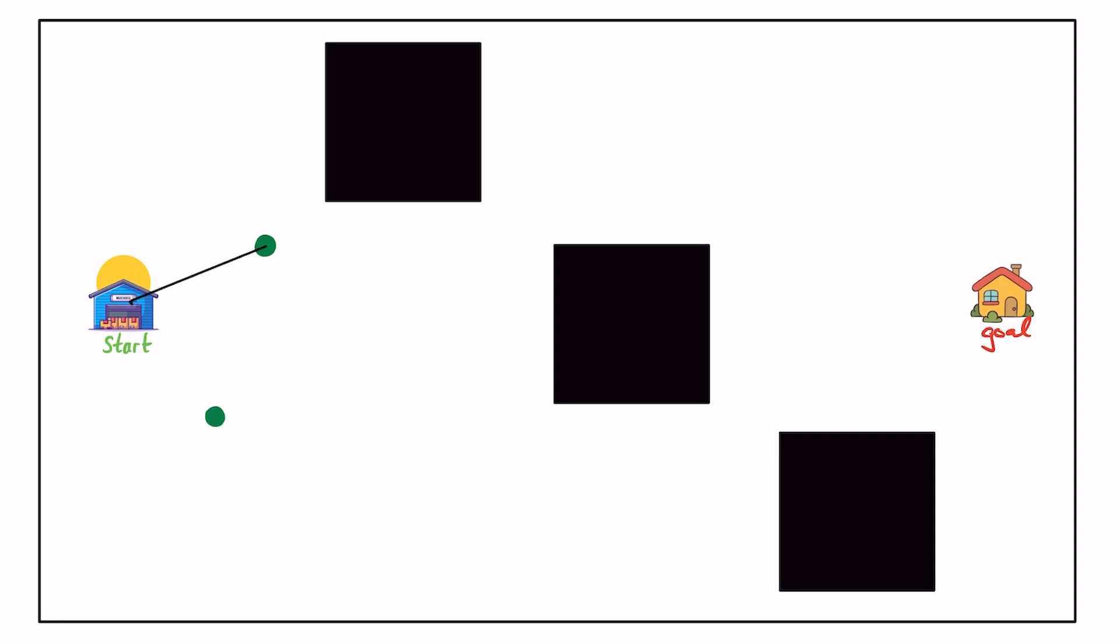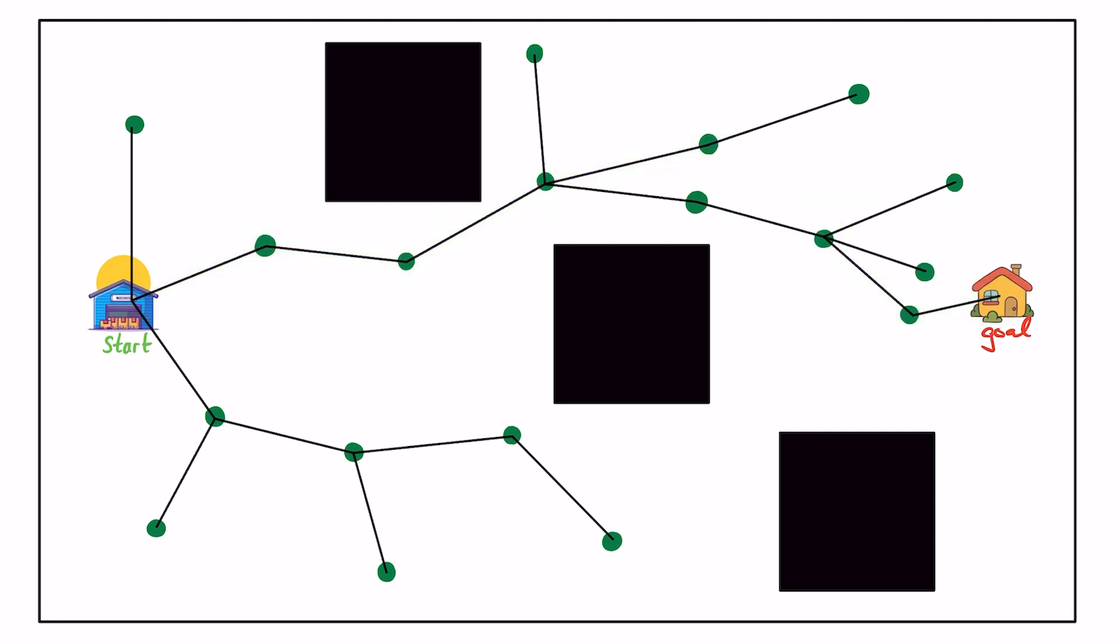To explain this algorithm simply, RRT-star works by randomly generating points and connecting them to the closest available node. Each time a point is created, a check is made to verify it does not obstruct an obstacle. And nodes placed in the vicinity are reconnected based on whether the path is shorter using the new node. This process continues until a specified number of nodes are placed on the map.